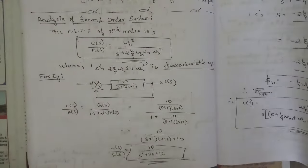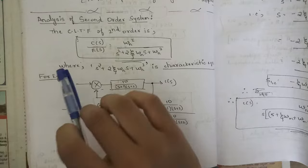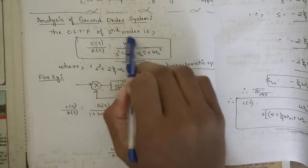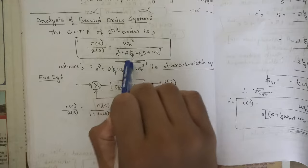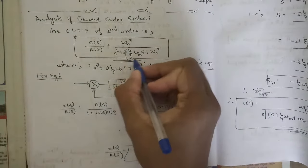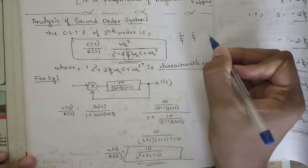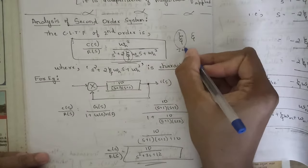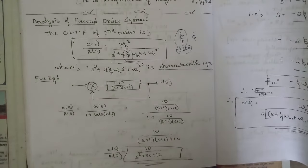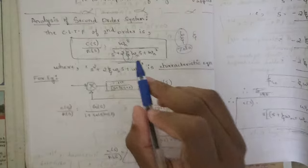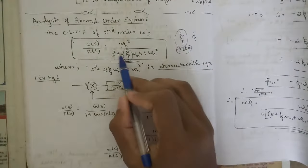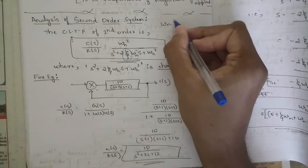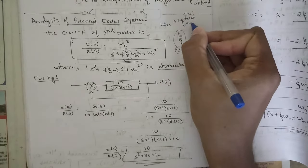This is about the analysis of the second order control system. The closed loop transfer function is given by C(s)/R(s) = ωn² / (s² + 2ζωns + ωn²), where this symbol is called zeta (ζ). This is the perfect way of writing zeta. Here ωn is called the natural frequency.